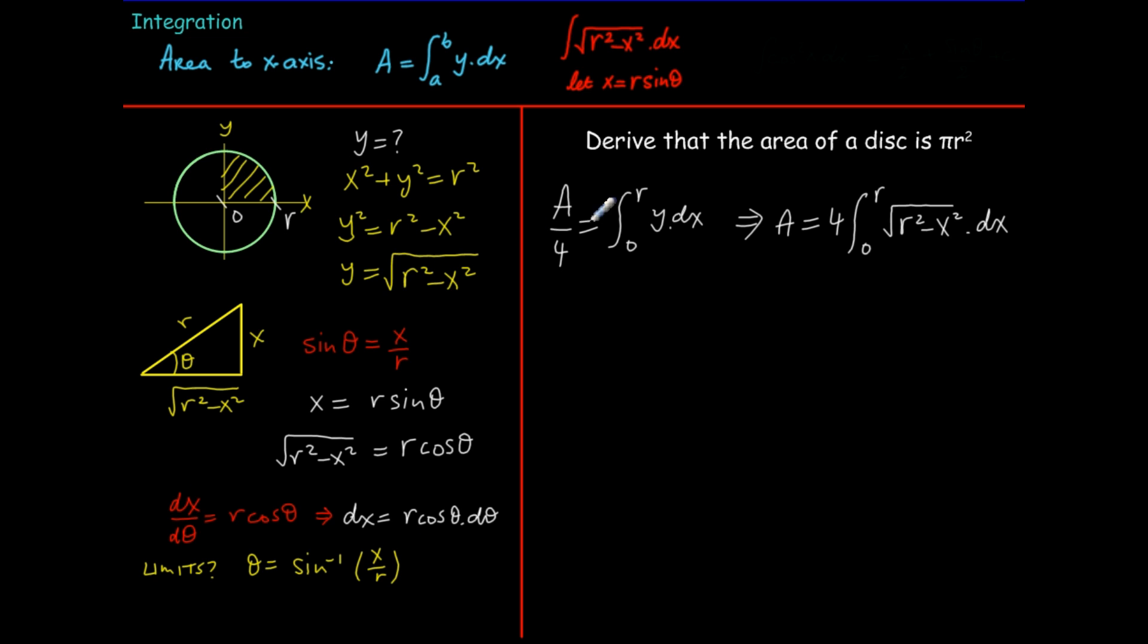So the first limit we'll call theta 1, substituting in r instead of x, so it's sine inverse r over r. Well r over r is 1 and sine inverse of 1 is 90 degrees or pi over 2 in radians. Substituting in zero for x we're getting sine inverse of zero which is zero. Now we're ready to rewrite our expression. You could learn off this way of rewriting it but it's important to understand where it comes from.